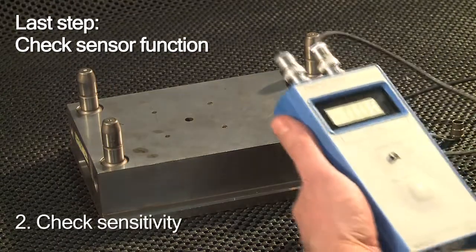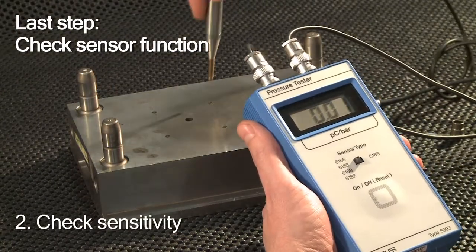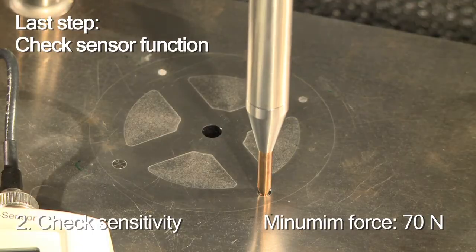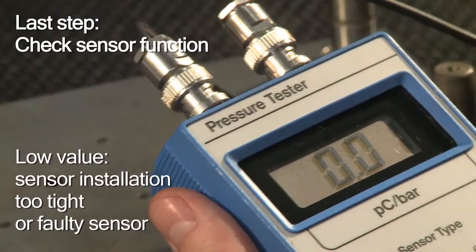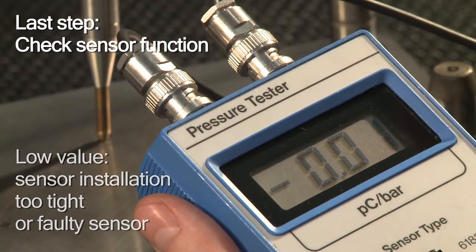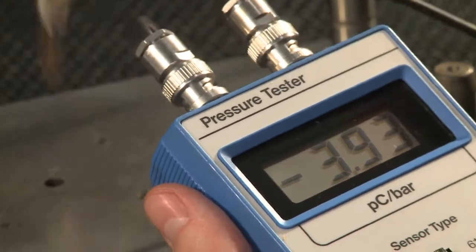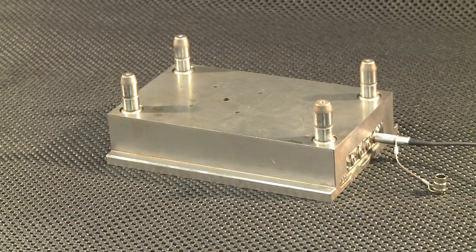Finally you check the sensor's sensitivity. If the indicated value is too low, the sensor is either installed too tightly or it's faulty. If it consistently stays within the recommended range, everything is fine. Congratulations.